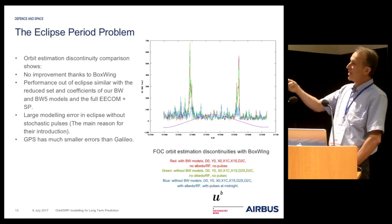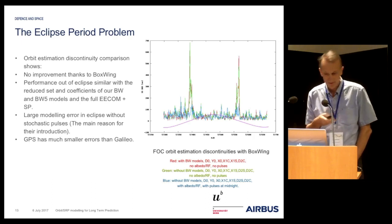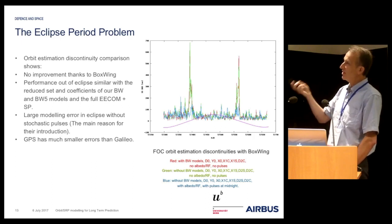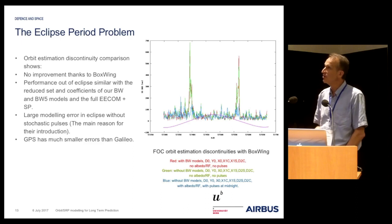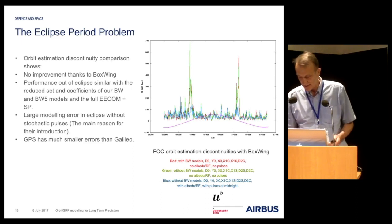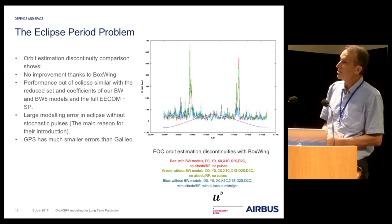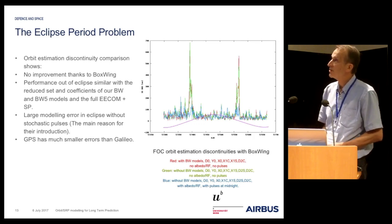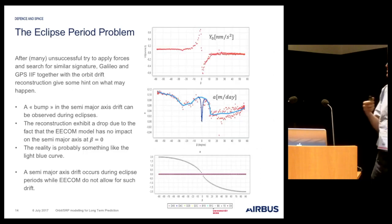This is compared with the current set of coefficients used in the code software with stochastic pulses shown in blue. With stochastic pulses during eclipse, the behavior is quite good. But without stochastic pulses, it is not good — errors up to 70 centimeters. It is also noticeable that GPS has much more errors than Galileo. So we try to understand what occurs during the eclipse period.